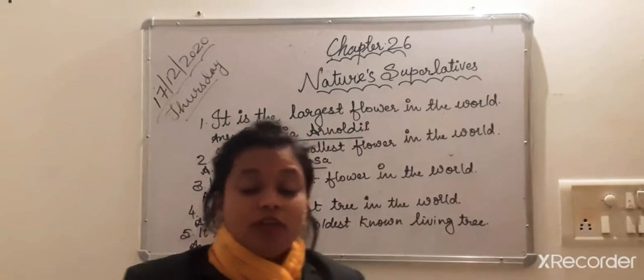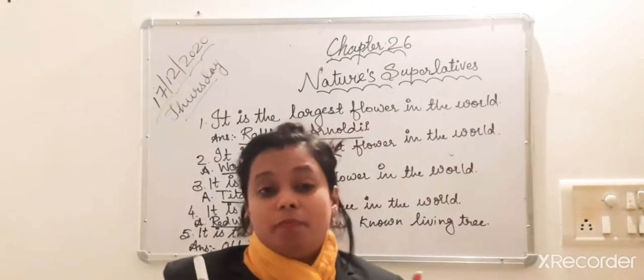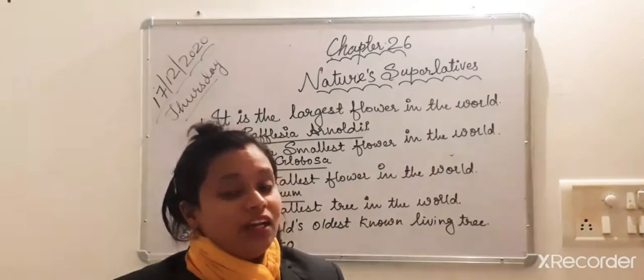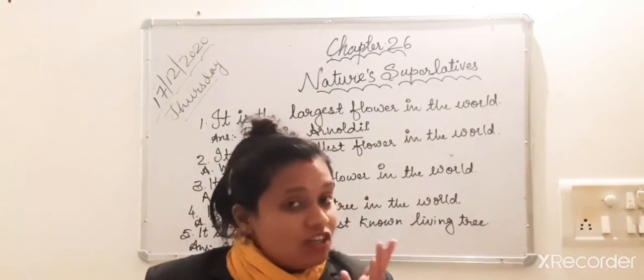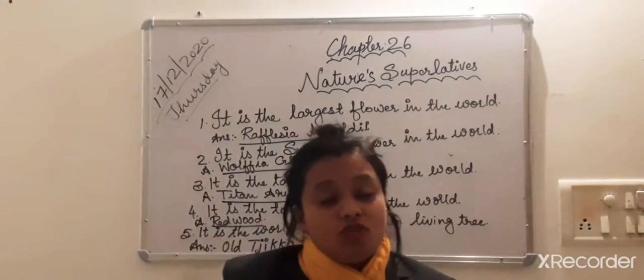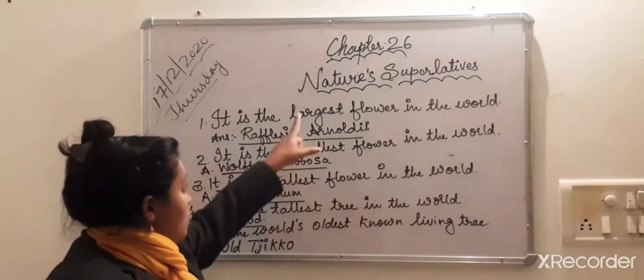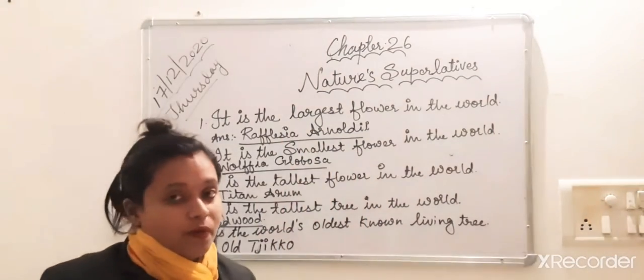Again you can see in the video the tallest flower, Titan arum. That's why the word nature's superlative is used - the best one. By looking at it you will say wow. There's a tallest tree also, there's a tallest flower also, so we are talking about nature's superlatives.